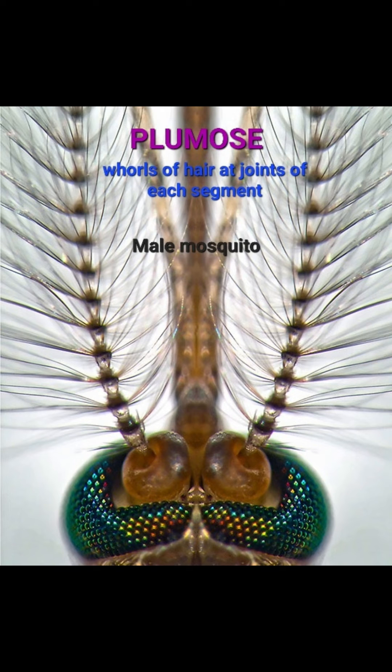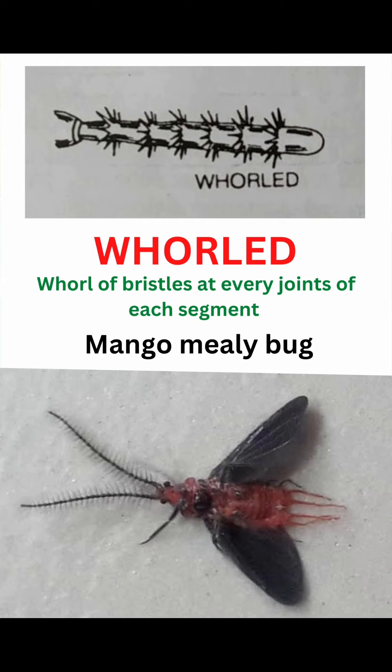Next is verticillate antenna, like in mango mealybug, where a whorl of bristles arises at every joint of the segment.